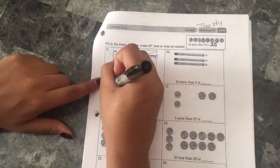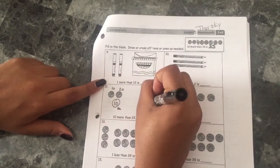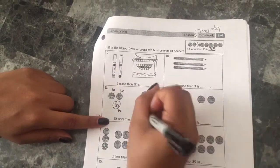And now you can count your coins. So ten, twenty, thirty, thirty-one, thirty-two. Ten more than 22 is 32.